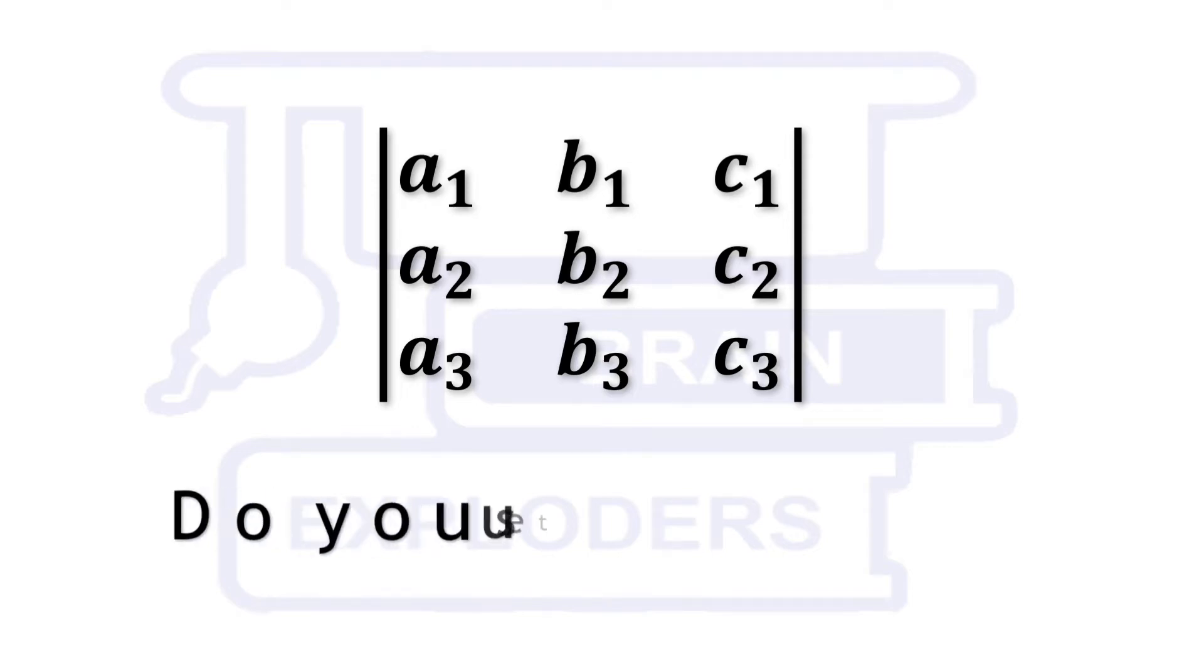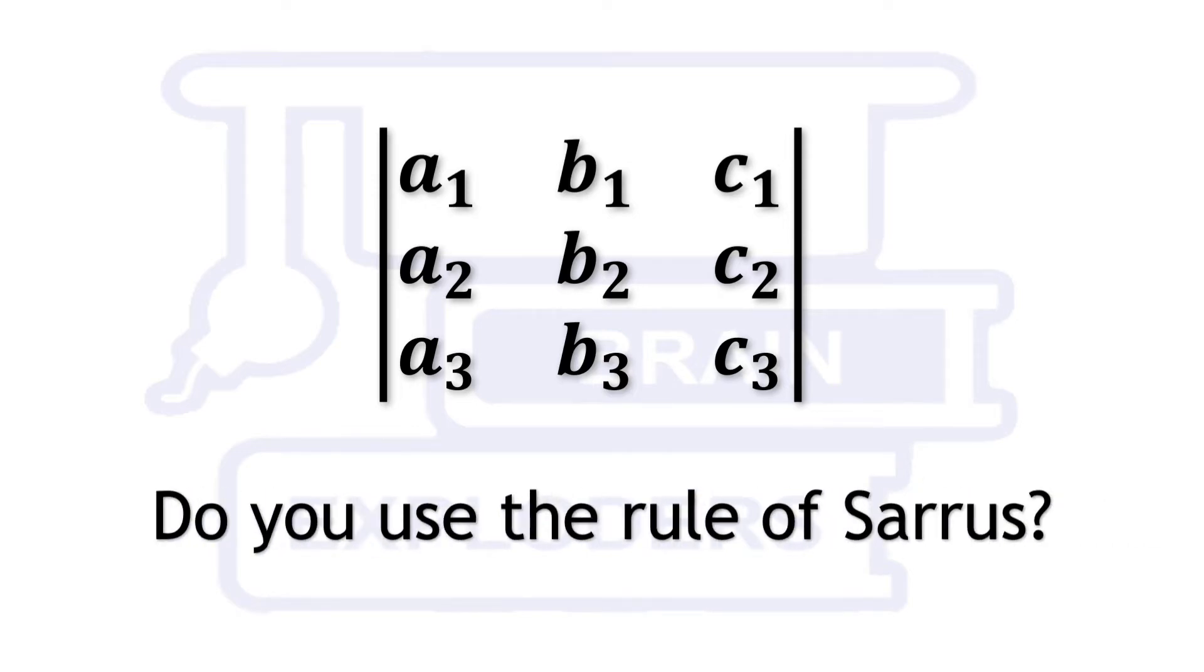What is your method to find the value of a 3x3 determinant? Do you use the rule of Sarrus?